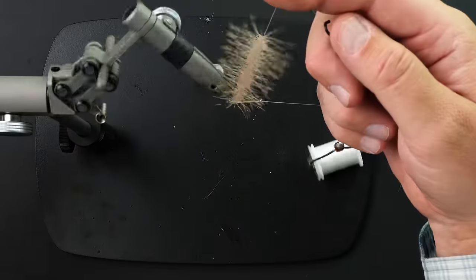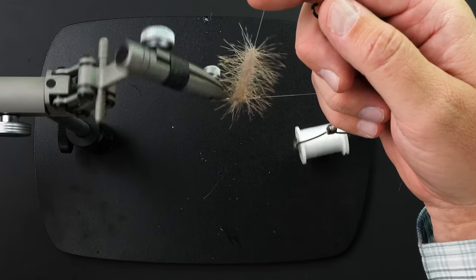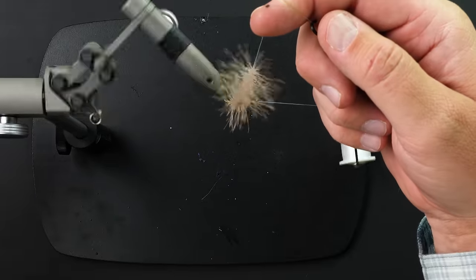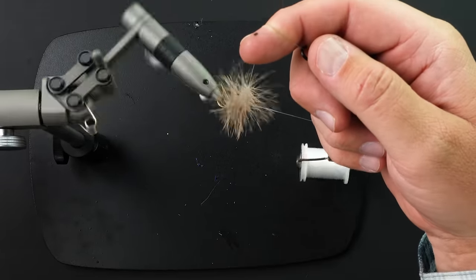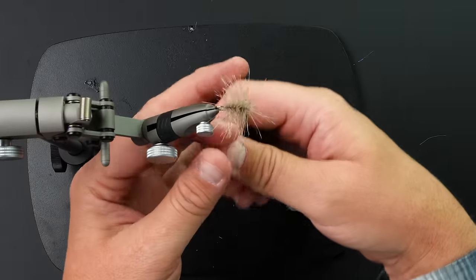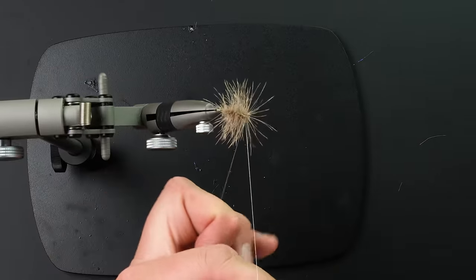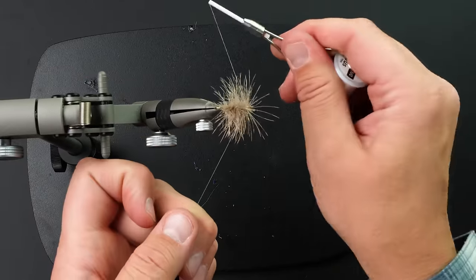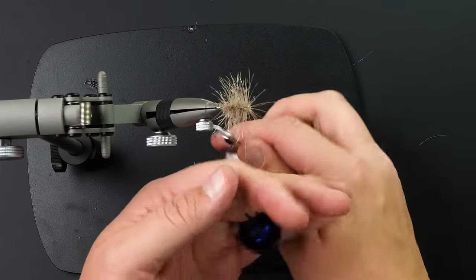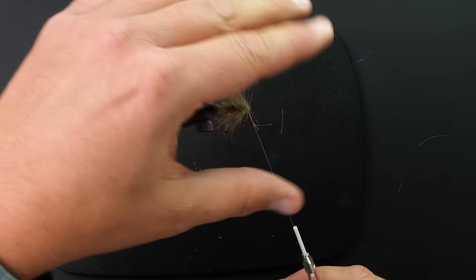So when I use the rotary feature, I can just wrap that forward. And obviously you wouldn't have to do this, but it's a really cool way to build a body. Like you can turn this into a Goddard caddis. It's pretty simple. So we'll trim that off and then I'll just kind of show you some options with the body.